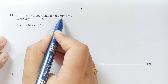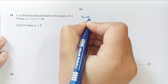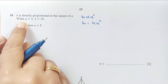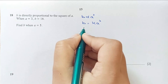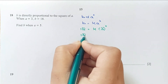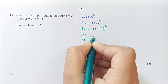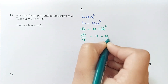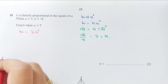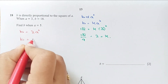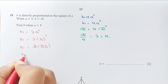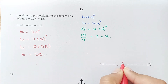Question number 18. B is directly proportional to A squared, so B equals K times A². When A is 3, B is 18: 18 equals K times 9, so K equals 2. The equation is B equals 2A². When A is 5, B equals 2 times 25 equals 50.